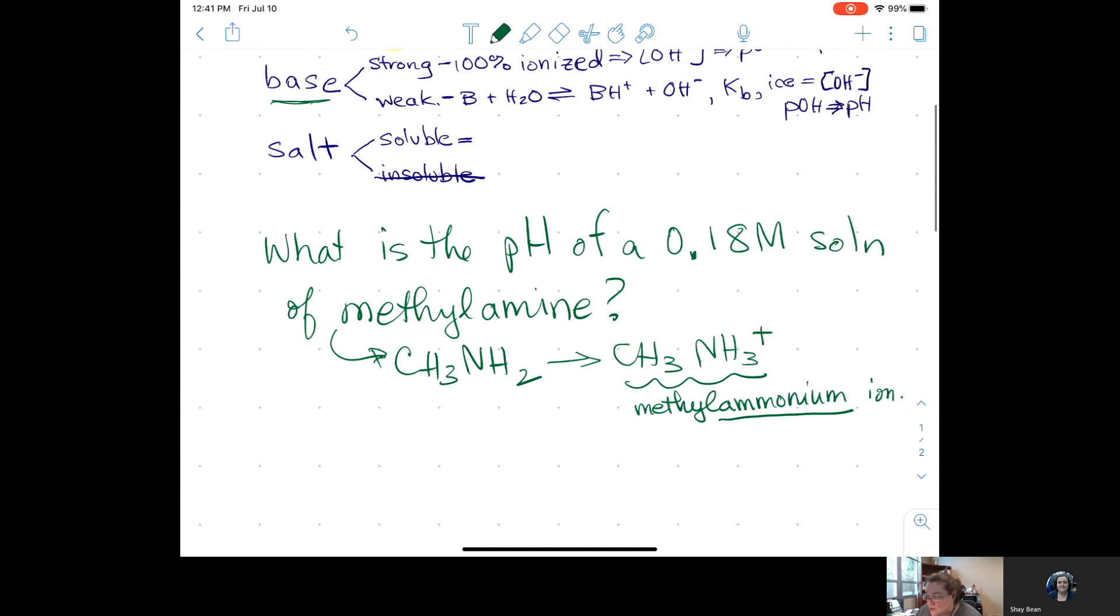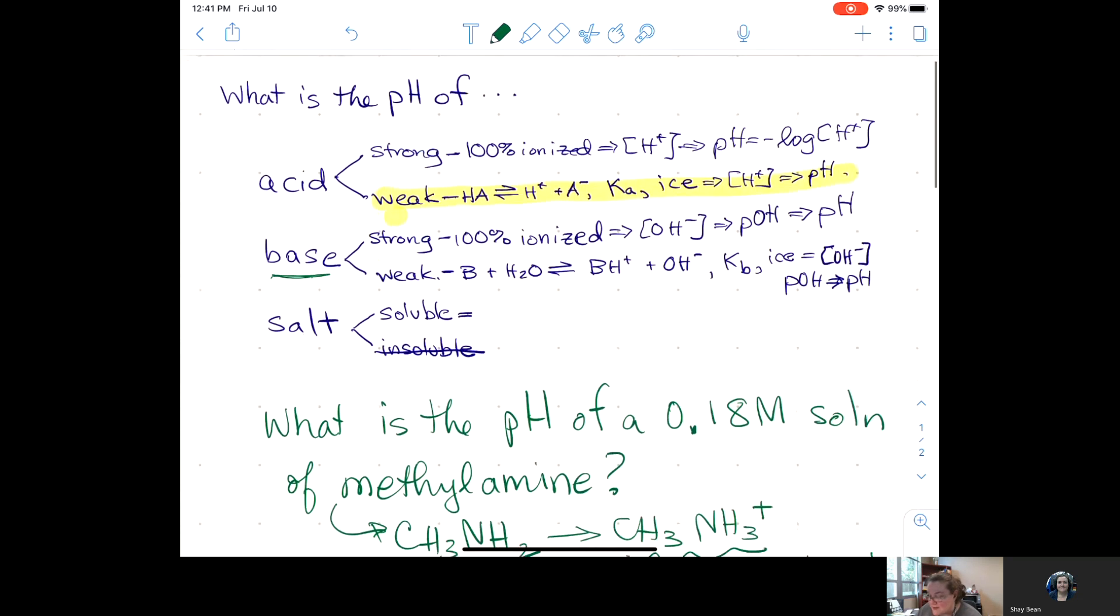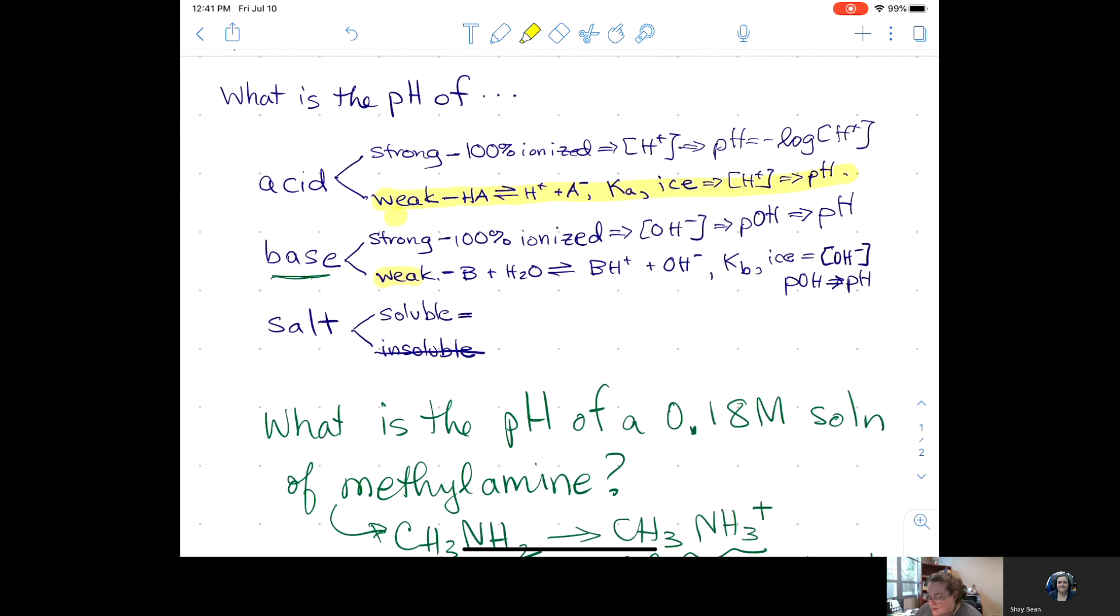All right, so what is the pH of this solution? Once you've identified that he's a weak base, then you're going to write an equilibrium reaction. You can write it with the formula, or you can write it with the generic formula. We are going to need a KB table. We're going to set up an ICE table to find an OH-, we're going to calculate a pOH, and from that we'll get our pH. So let's walk through those steps.